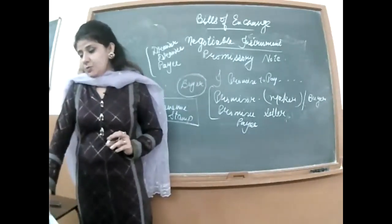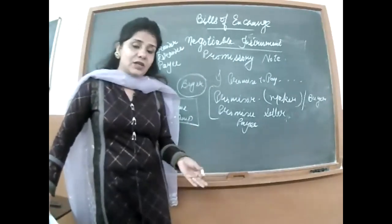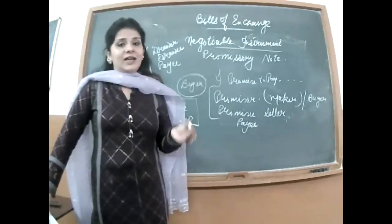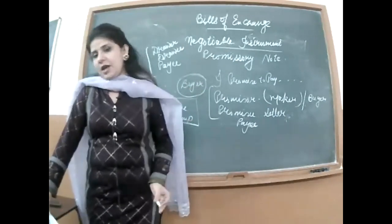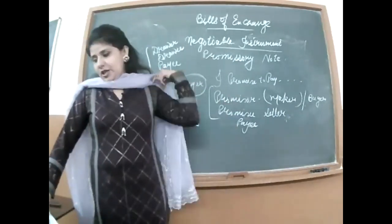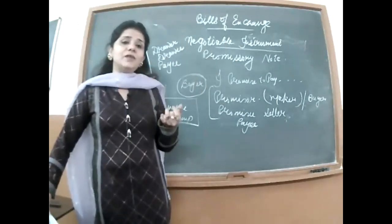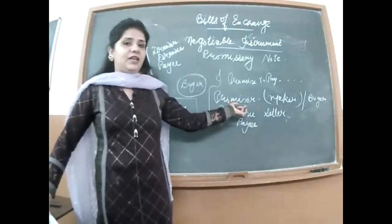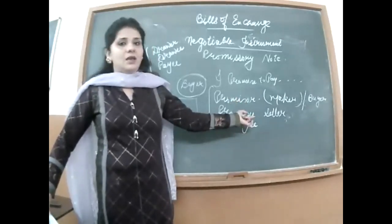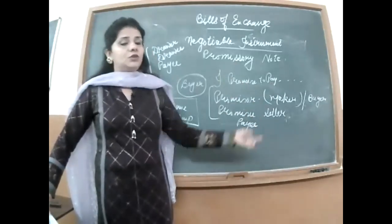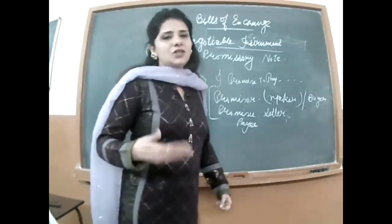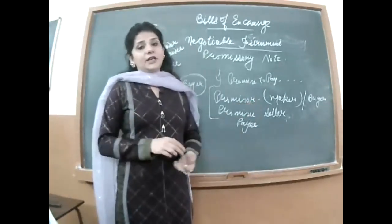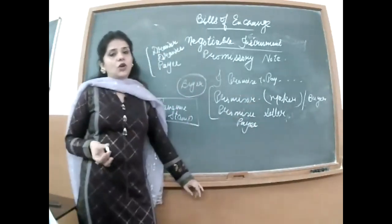Ninth, the amount payable must be in legal tender money of India — the currency that is in circulation in our country. If you are in India and write 'I will pay you in dollars,' that is not valid. The promise must be in Indian rupees. Tenth, it should not be payable to the bearer — meaning someone who may have stolen the document or who was not informed to the promisor by the promissee.